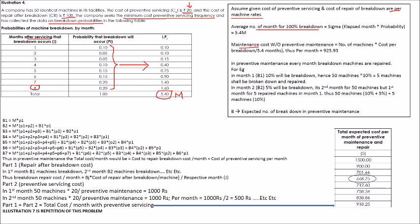Now I'm going to calculate the maintenance cost without a preventive maintenance policy — this may appear as a 2-mark question. Without preventive maintenance, we have 50 machines and the cost of repairing one breakdown (CR) is 100 rupees. So 50 machines multiplied by 100 rupees, and for all 50 machines to fail it takes an average of 5.4 months, so divided by 5.4 months gives 925 rupees per month.